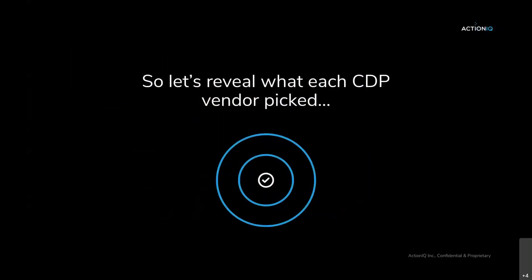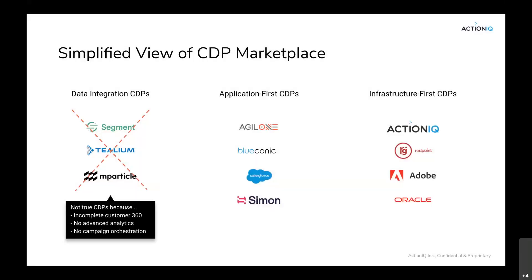So let's reveal what each CDP vendor picked. There are different types: application-first, infrastructure-first, and also a third type — data integration CDPs — which, while good solutions, are not great solutions for the full criteria of a CDP. They're not meeting the criteria of creating a complete customer 360, providing advanced analytics and segmentation, as well as campaign orchestration. We'll focus today on the application-first and the infrastructure-first CDPs.